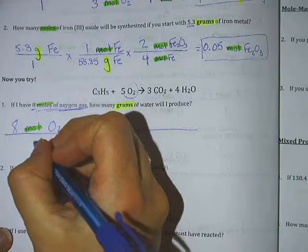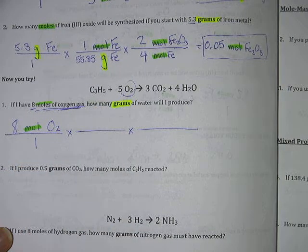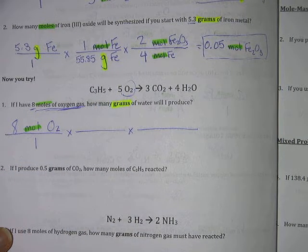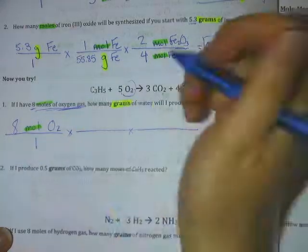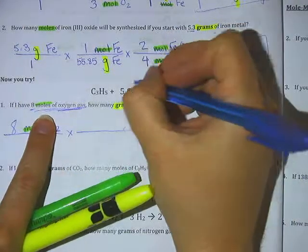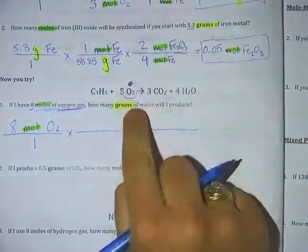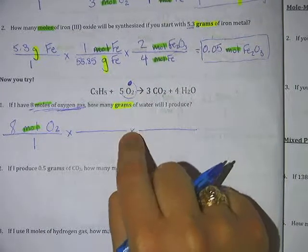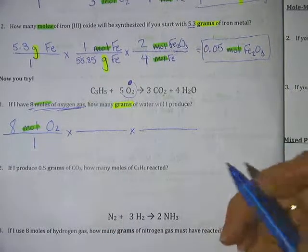And then the first fraction, the bottom, is always just a one. Just like normal, just like before. That's not changing. Now, this number that they gave us, this eight moles, is for oxygen. So we know we're going to start at oxygen. You can put a really big dot above oxygen to remind yourself that's where I'm starting.